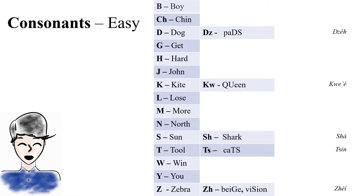We can start with the consonants I consider to be part of the easy set because they exist in English as well. I'll go down the list and then we'll talk about the more complicated ones afterward.